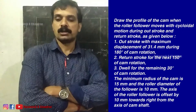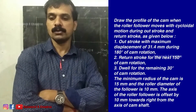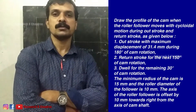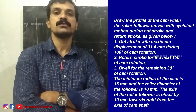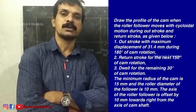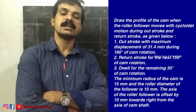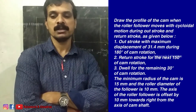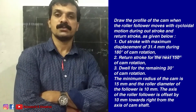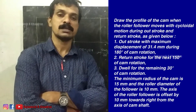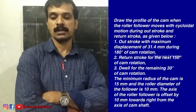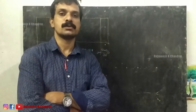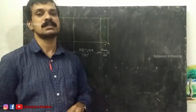The question on screen: draw the profile of the cam when the roller follower moves with cycloidal motion during outstroke and return stroke. Outstroke with maximum displacement of 31.4 mm during 180 degrees of cam rotation, return stroke for the next 150 degrees, dwell for the remaining 30 degrees. The minimum radius of the cam is 15 mm, roller diameter is 10 mm, and the axis of the roller follower is offset by 10 mm towards the right of the camshaft axis.